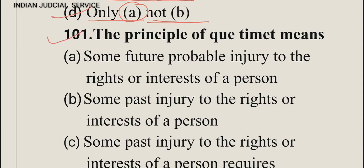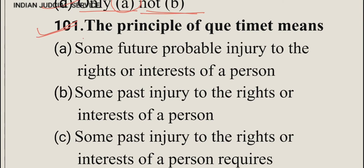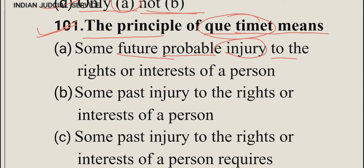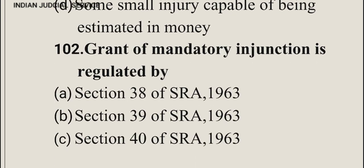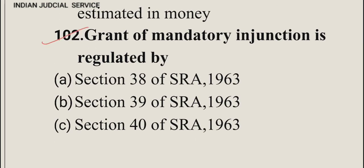Question number 101: The principle of quia timet means — quia timet means some future provable injury to the rights or interests of a person. The answer is option A. The most important words here are 'future provable injury.'